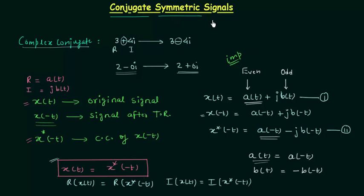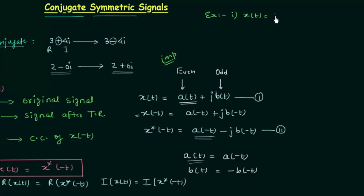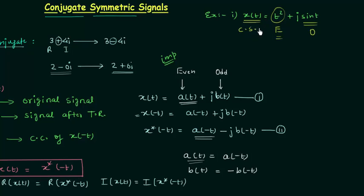Let's solve one problem. Signal x(t) = t² + j·sin(t). We already know t² is even and sin(t) is odd, so the condition is satisfied — the real part is even and the imaginary part is odd. Therefore, signal x(t) is a conjugate symmetric signal.